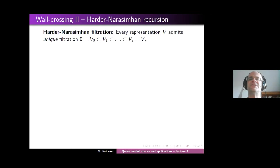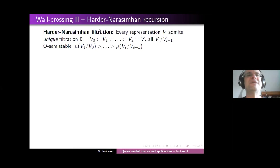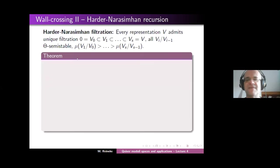I will show you that this computation of the motives of moduli spaces just follows formally from the existence of the Harder-Narasimhan filtration, which we introduced on Monday. Let me repeat it: every representation V admits a unique filtration such that all the subquotients are theta semi-stable, and the slopes of the subquotients are decreasing. That was this wonderful Harder-Narasimhan filtration, and the very nice thing about it is that it is unique and can even be made functorial.